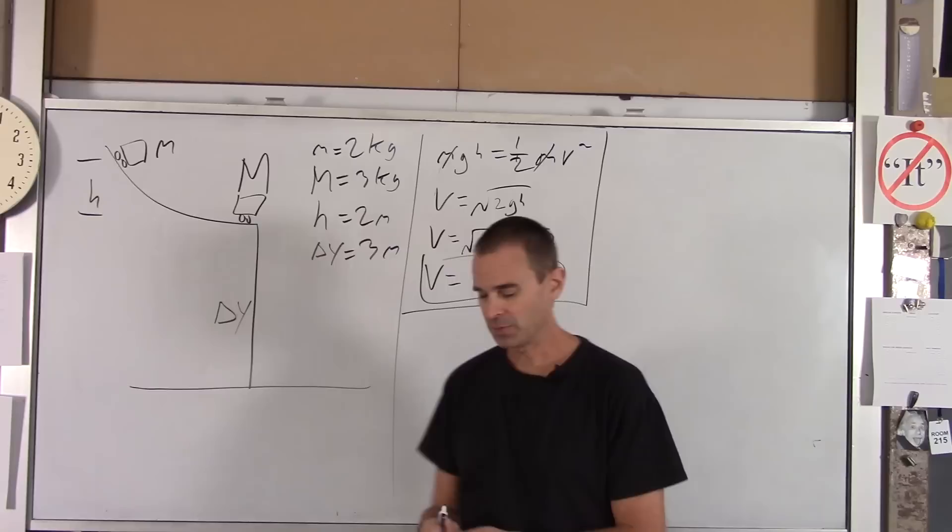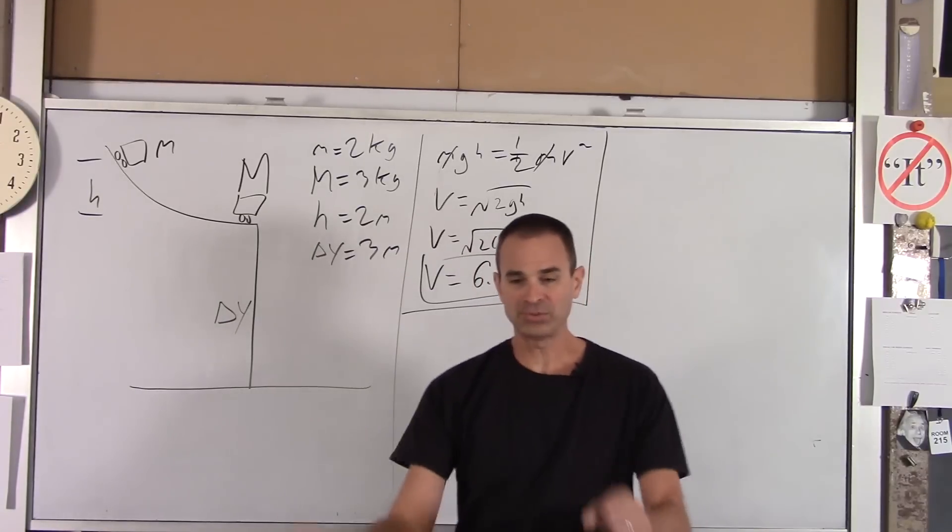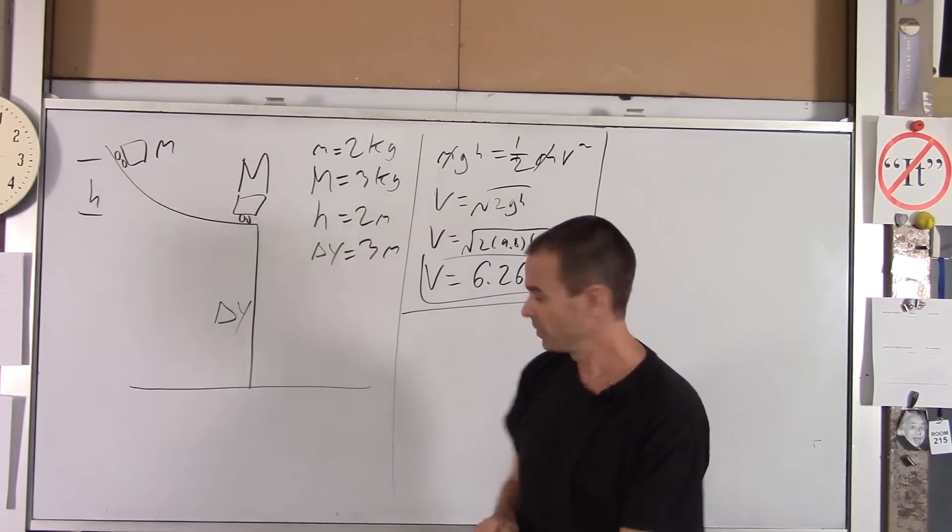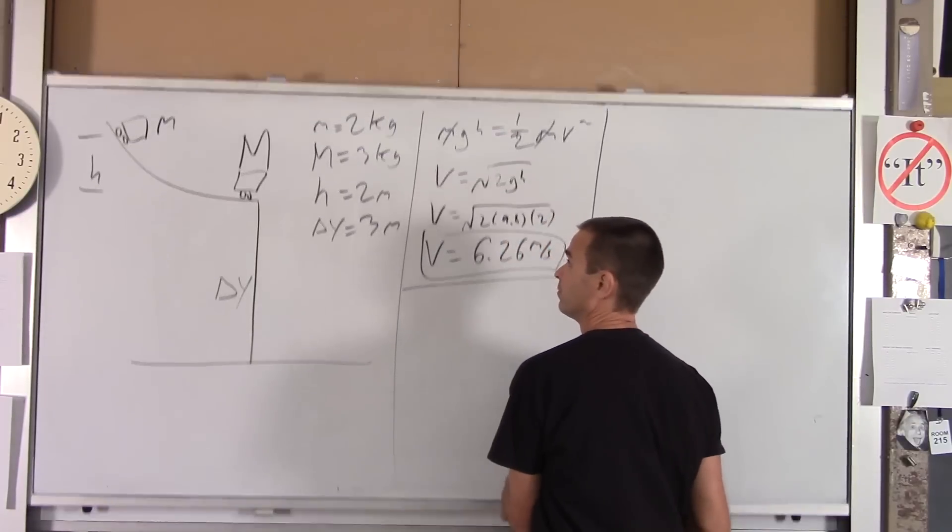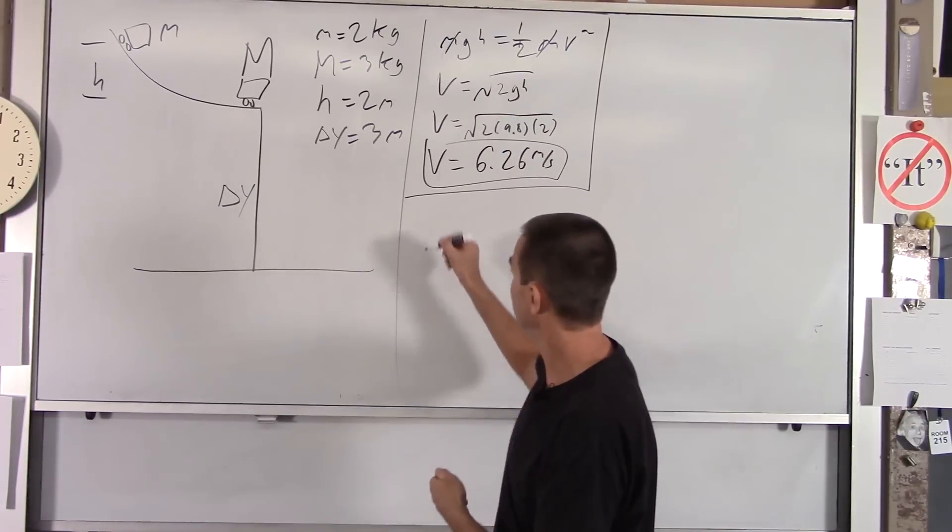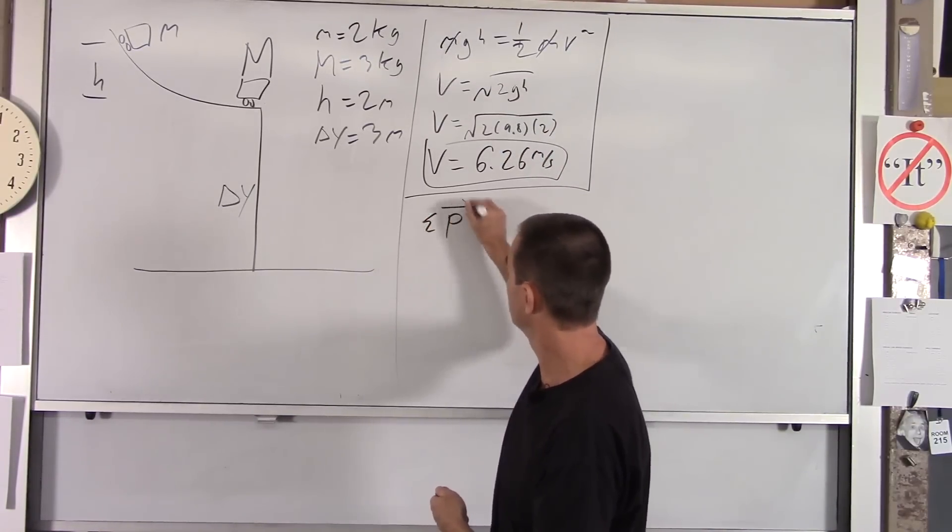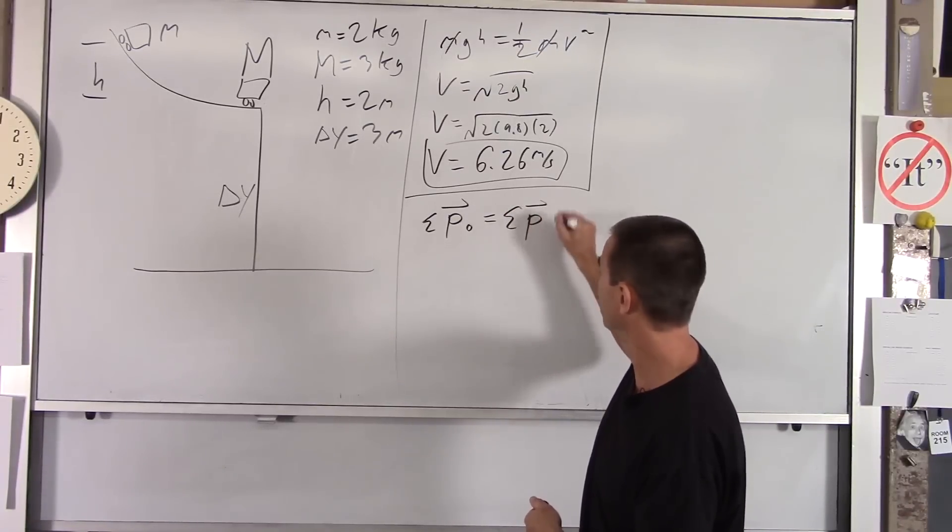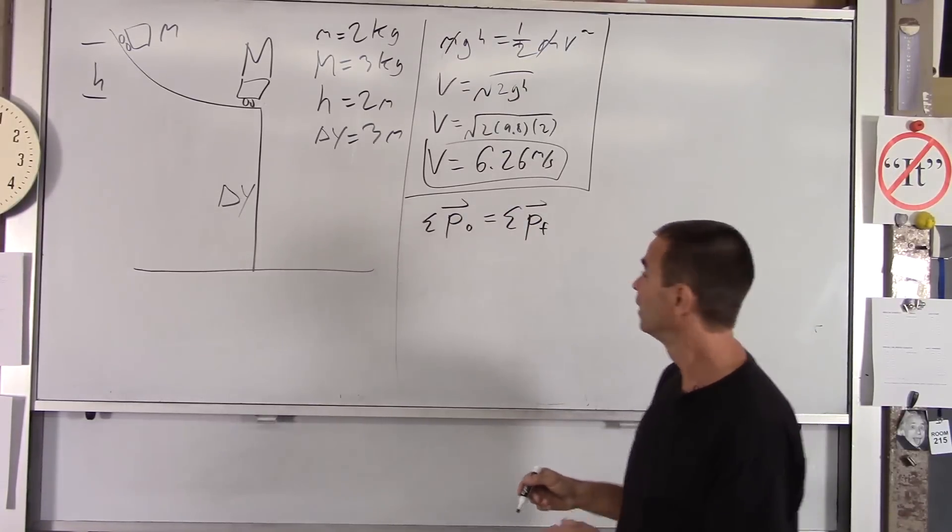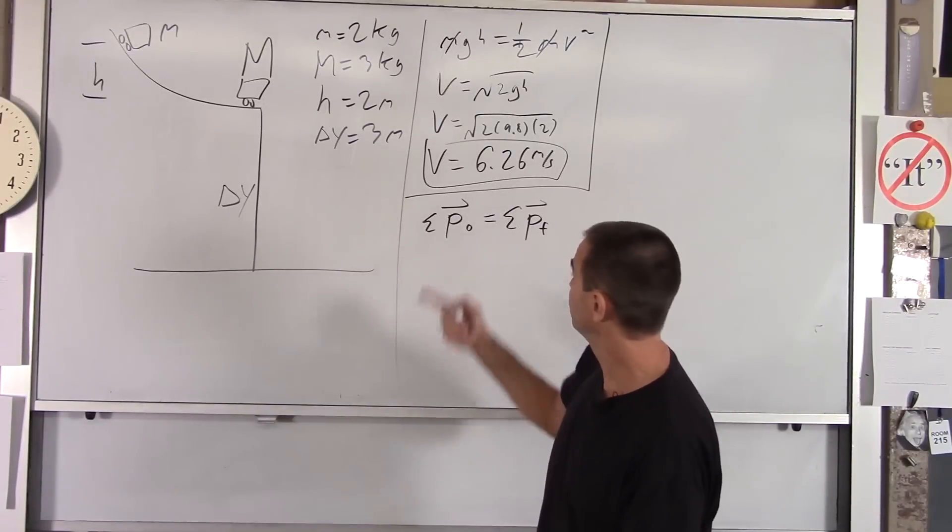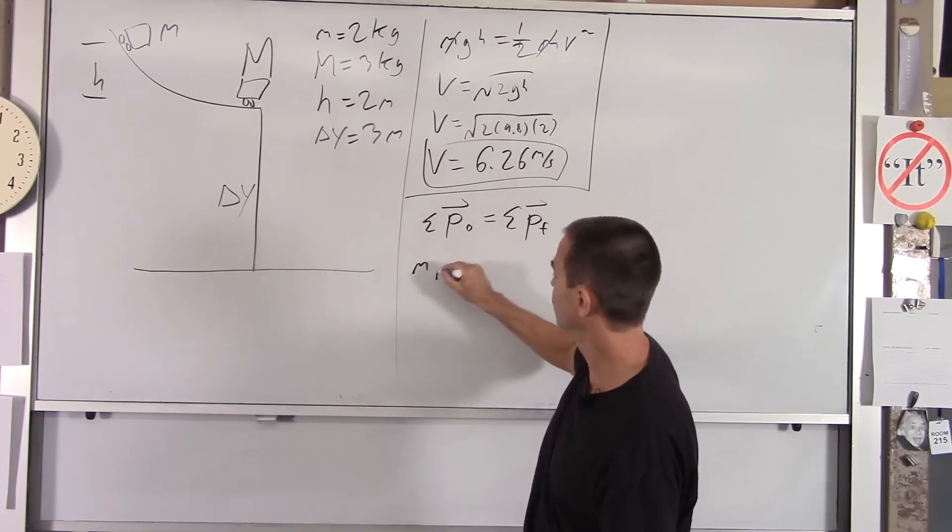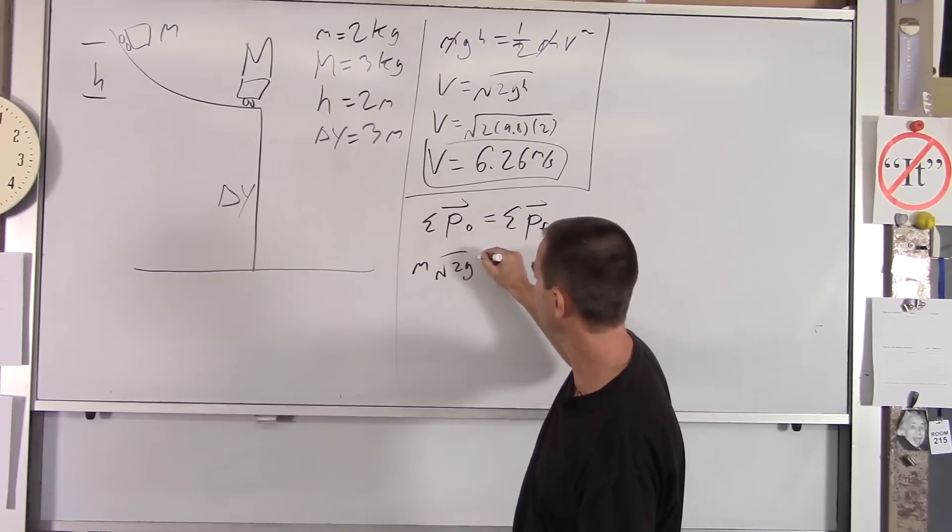Now they're colliding. When two objects interact, you want to use conservation of momentum. So the total momentum right before the impact is going to equal the total momentum after the impact. Well, before the impact, you just had little dude, which is little m, moving with root 2gh, which I've got a number for.